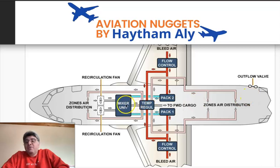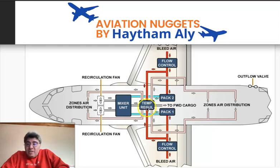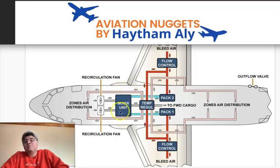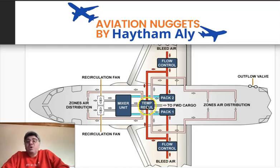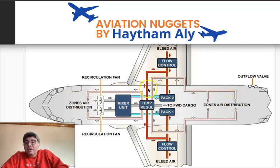Before air travels from the mixer unit into the three zones, the enhanced or optimized temperature regulation takes place. Hot air — shown as a red arrow — coming from before the packs is added to the air from the mixer unit. The main components are one hot air trim pressure regulating valve and three trim air valves, one for each zone.